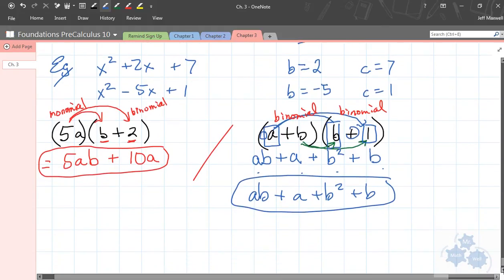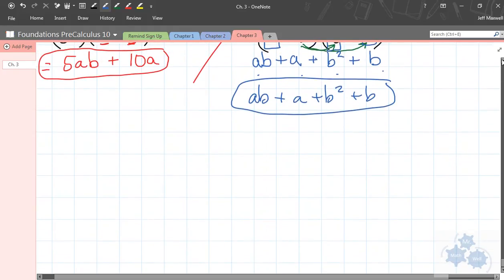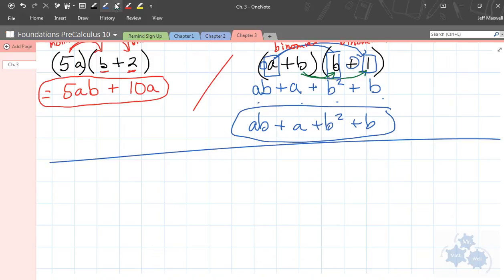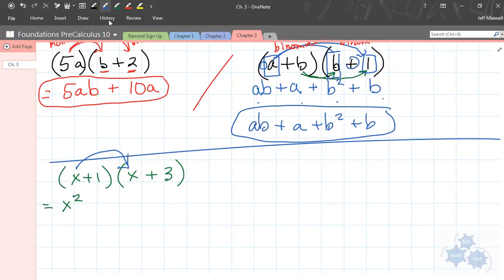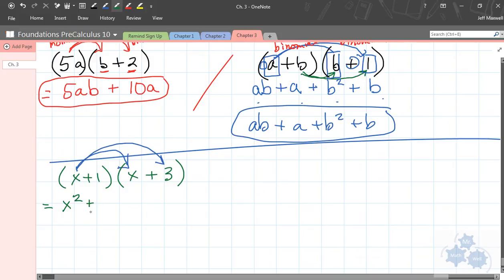So, that's how we multiply by distribution. Binomial times a binomial. Now, do we have any like terms here that I can squish together, or that I can combine into one? Any like terms? Remember we talked about like terms? Any like terms? You know what? I don't see any like terms here. A, B, A, B squared, and B. Those are all different. So, guess what? This is your answer for this expansion.